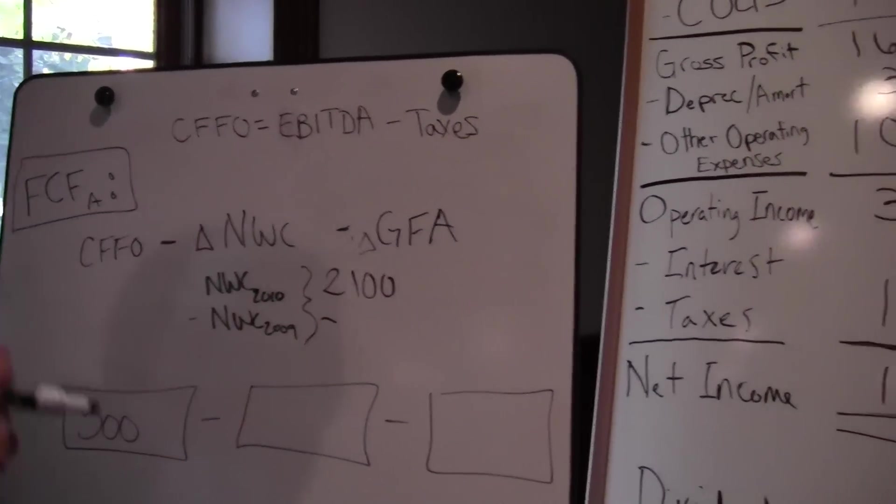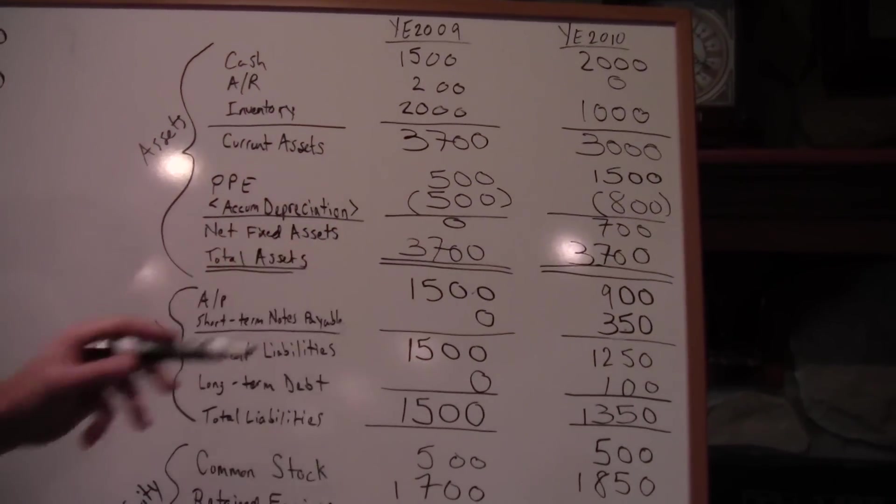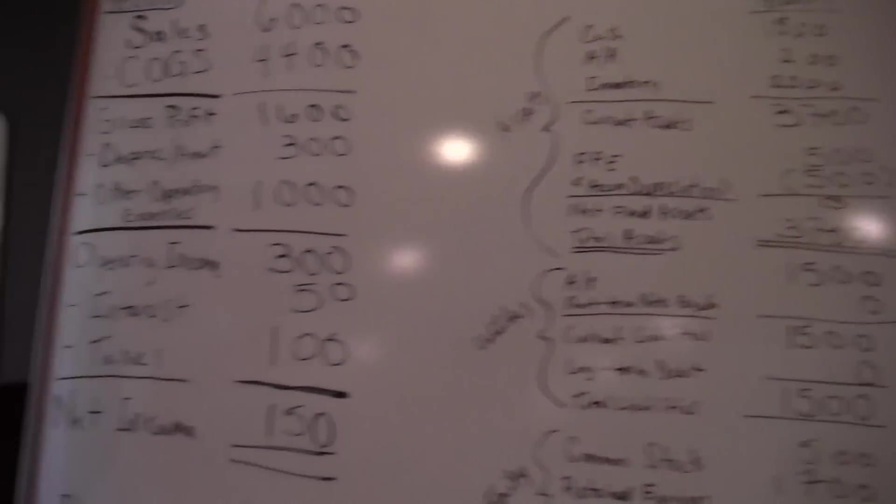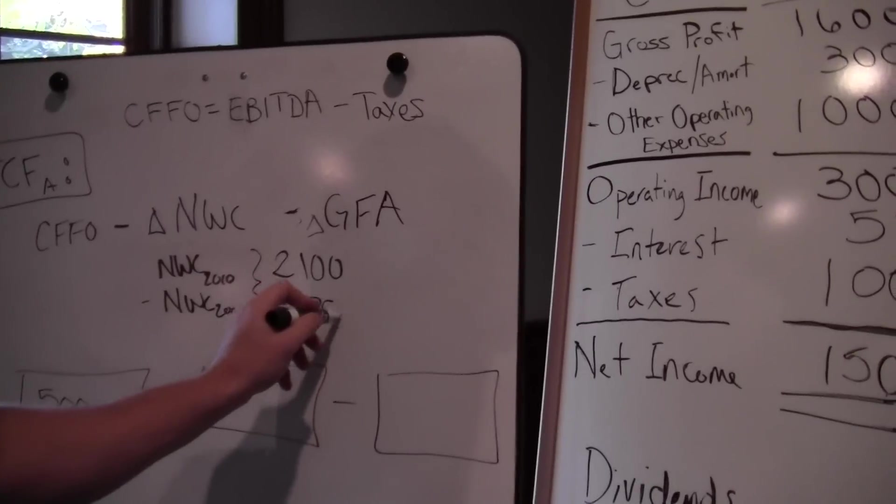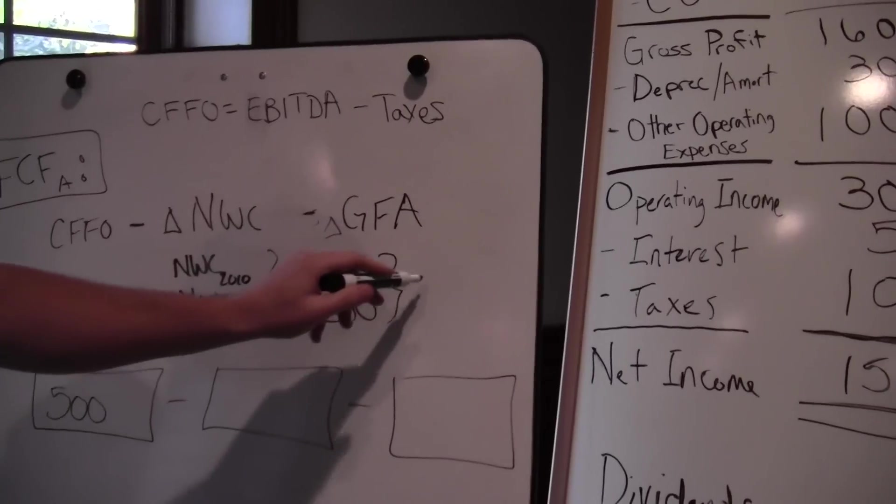We want to subtract out the year prior. So we go back to our balance sheet. We see that we have $3,700 minus our AP, it looks like $2,200 to me. And that net change is negative $100.